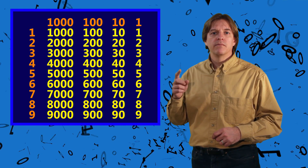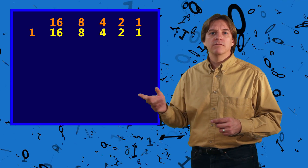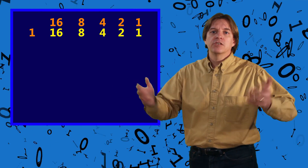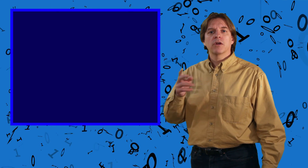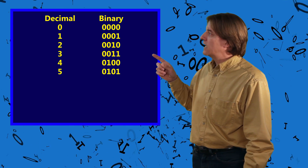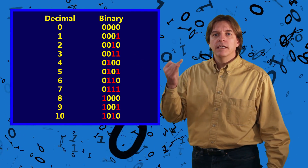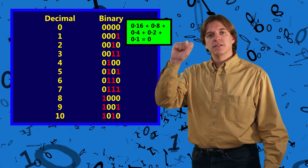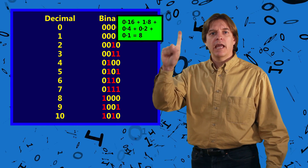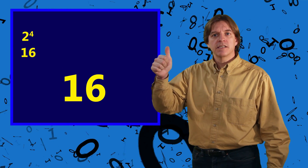Going back to our earlier example: in decimal, for each column's power of 10, you can multiply it by a number from 0 to 9. Binary, however, is much easier — for each column's power of 2, you can only multiply by either 0 or 1, because that's all the digits we have. Let's see what happens when we count from 0 to 10, looking at both decimal and binary side by side: 0, 1, 2, 3, 4, 5, 6, 7, 8, 9, 10. If we use a finger to indicate 1 and apply this pattern to our fingers, we can count 0, 1, 2, 3, 8, 9, and 10. By continuing this pattern on one hand, we can count to 31 — that's 16 plus 8 plus 4 plus 2 plus 1, which totals 31.